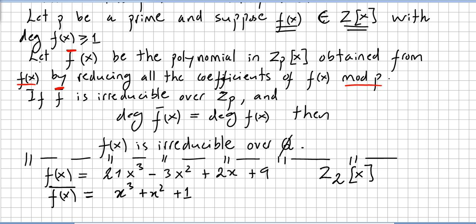We already did this step. We got f̄, the polynomial in Z_p, in our case in Z₂, obtained from f(x). That's what we have done, by reducing all the coefficients of f(x) modulo p. We have just done that. So if f̄ is irreducible over Z_p and the degree of f̄ equals the degree of f(x), then f(x) is irreducible over the rationals.